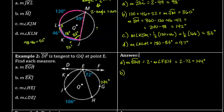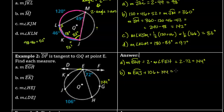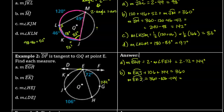Part B asks for arc EKJ. That arc is intercepted by angle DEJ, but I don't know that angle's measure yet. However, I do know the other arcs: the measure of arc EKJ + 106 + 144 = 360 degrees. So arc EKJ = 360 − 106 − 144 = 360 − 250 = 110 degrees.